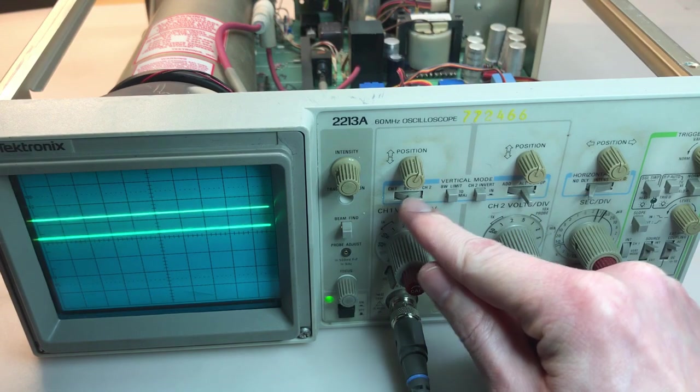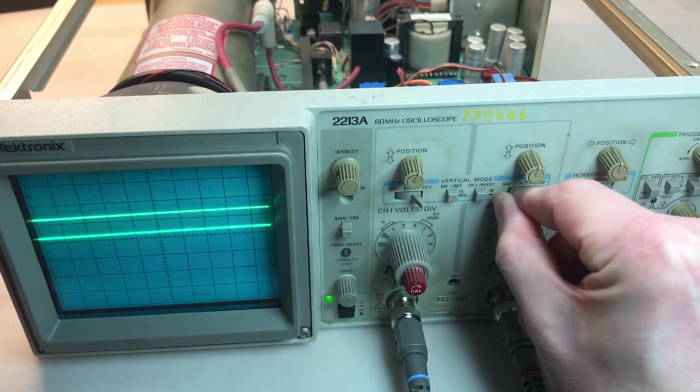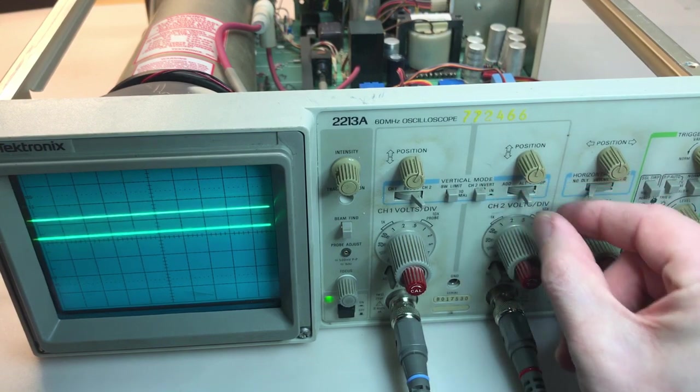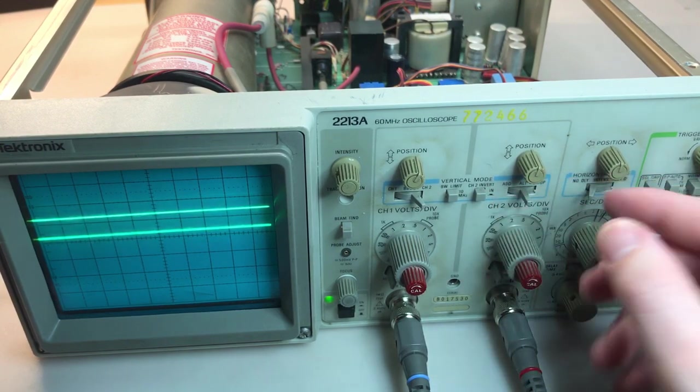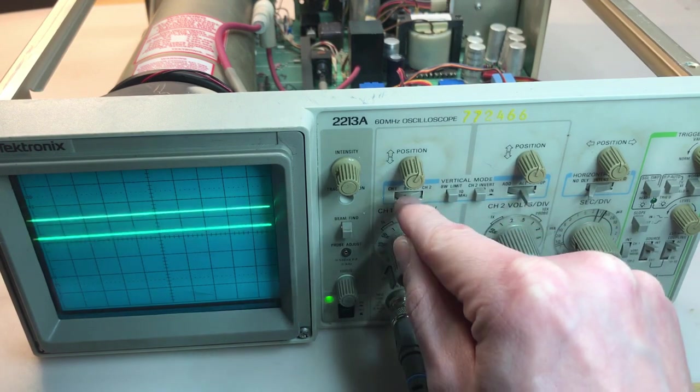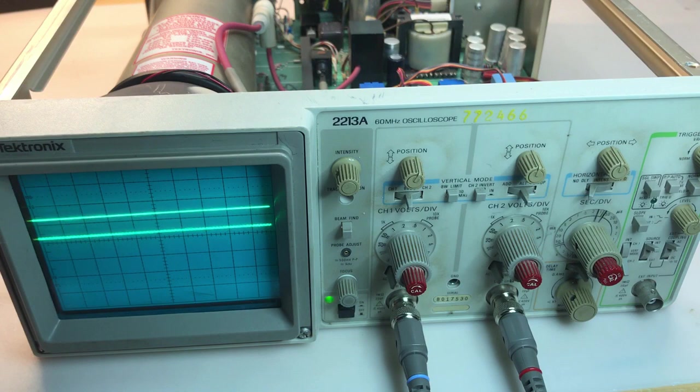Problem number two is this channel selection switch here is really light. What I mean by that is there's no resistance. When I use these other two switches of the same type, there's a lot of resistance. And there's really discrete and definite steps when you change positions. And this one's just kind of almost free floating. So there's some sort of mechanical issue going on there that I'll have to address.